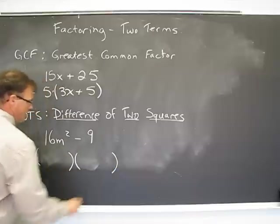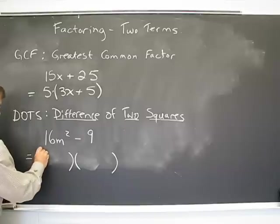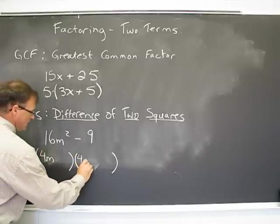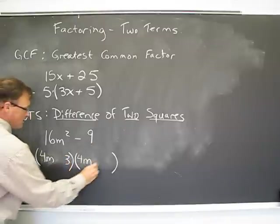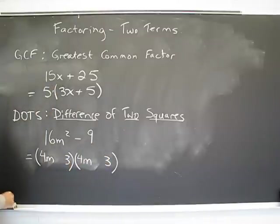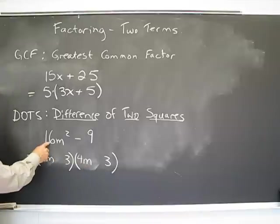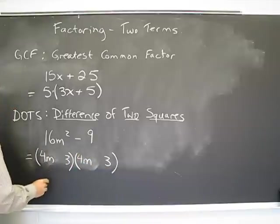So when I turn this into a difference of two squares, basically you're going to wind up with two binomials, and each of them is going to have the square root of the first term, starting both brackets, and the square root of the second term, ending both brackets. Right? 16m squared is going to square root as 4m. And 4m times 4m is 16m squared.